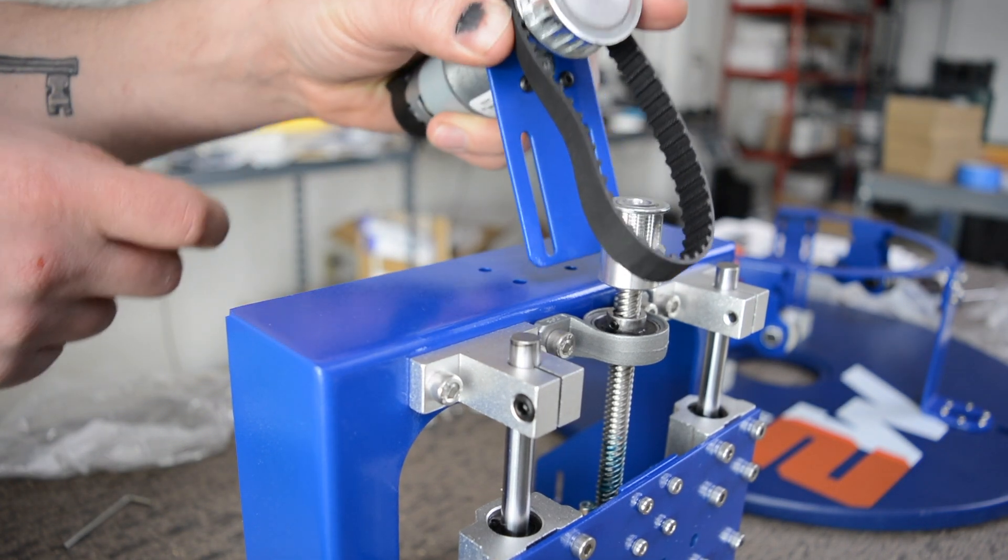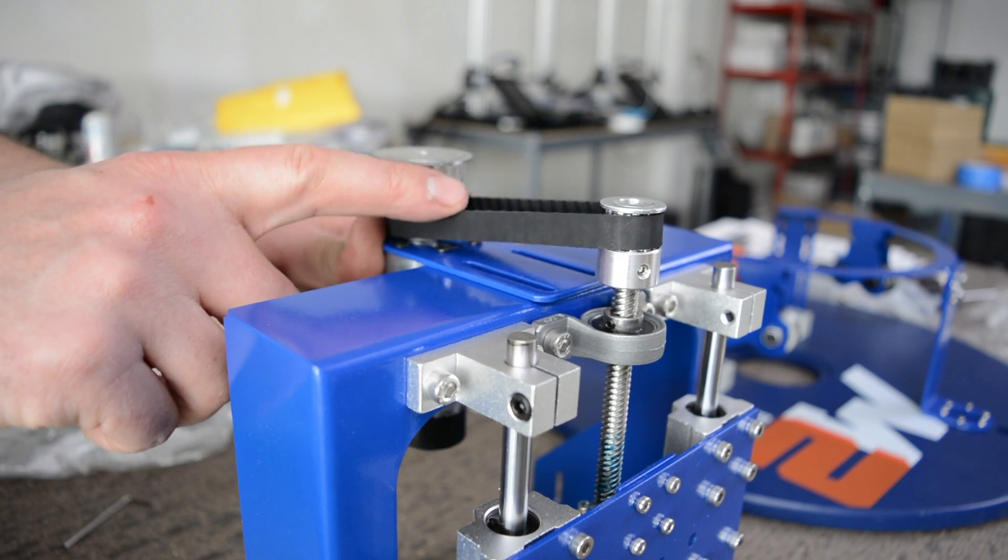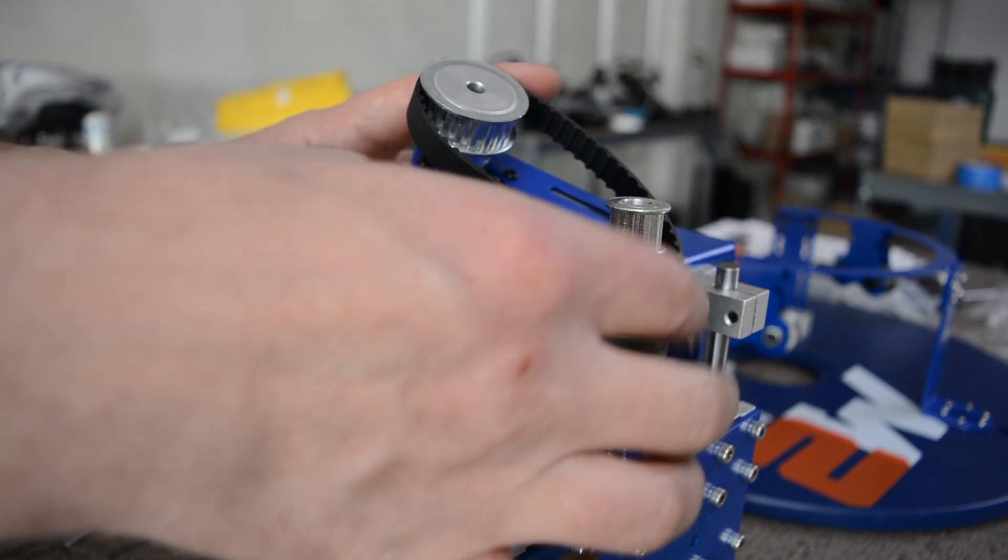If the belt is not on there it's not going to pull it tight. You can see here the belt is underneath where the gear is. The belts need to be on both of these gears because that's what turns and moves your z-axis up and down.